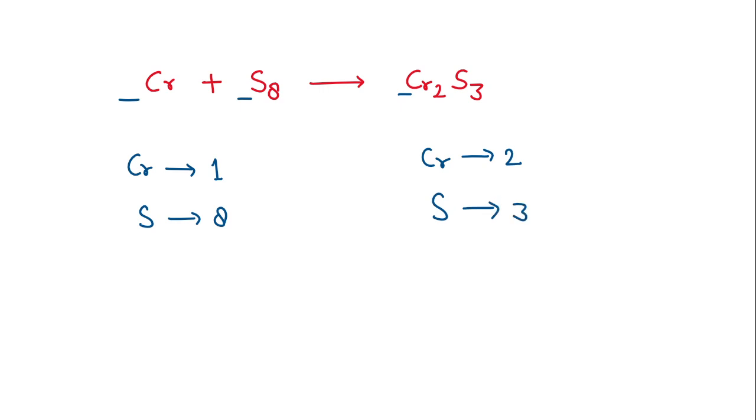First we will balance the sulfur atoms. We multiply 8 into 3, which gives us 24. So there should be 24 sulfur atoms on the reactant side and product side. We multiply it with 3, which gives us 24, and on the product side we multiply 3 by 8, which gives us 24.